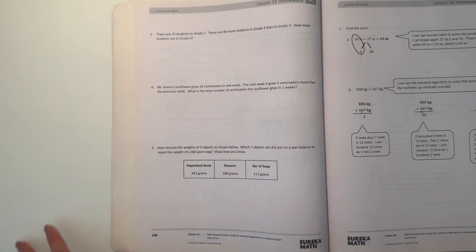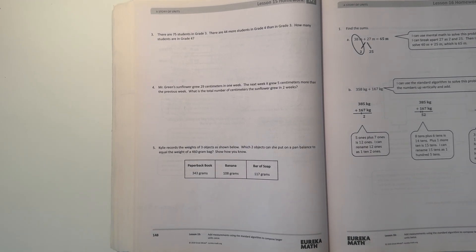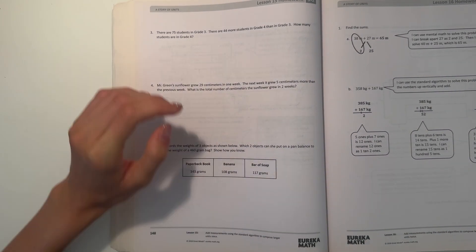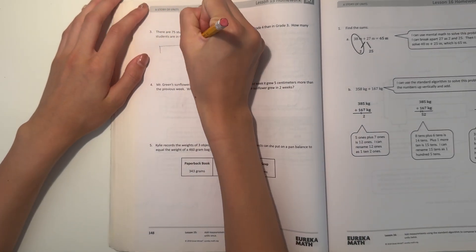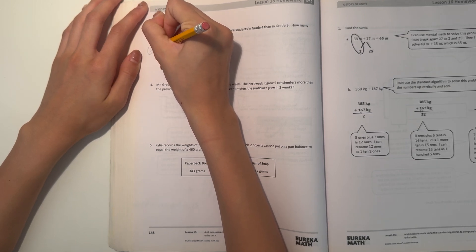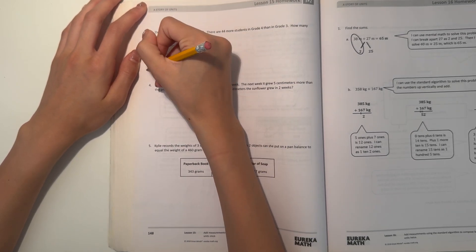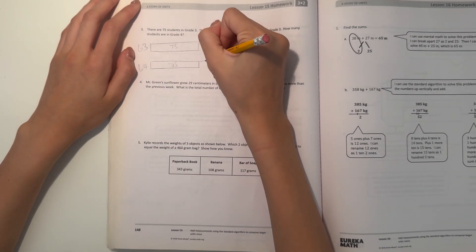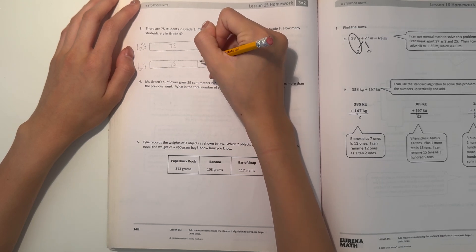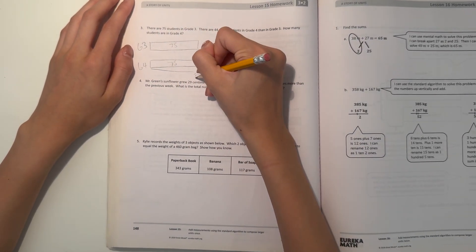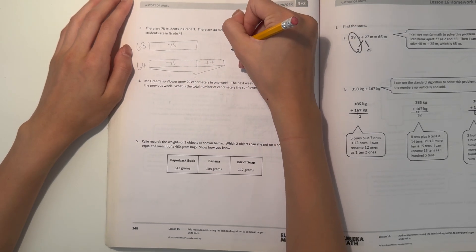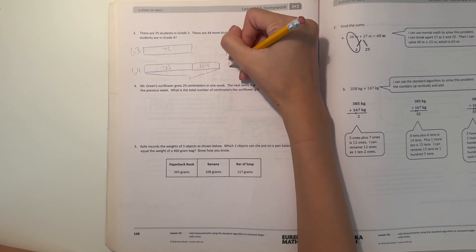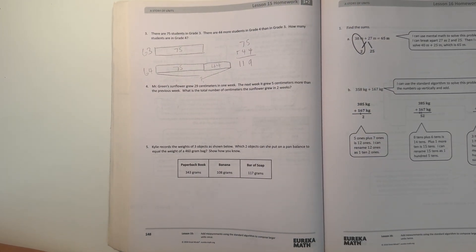Number three: There are 75 students in grade three. There are 44 more students in grade four than in grade three. How many students are in grade four? Let's make a tape diagram. In grade three there's 75 students. In grade four we know there's at least 75 students, but they have 44 students more. So we need to find out how many students are in grade four: 75 plus 44.